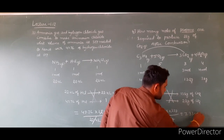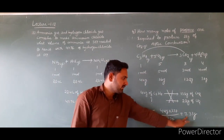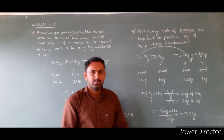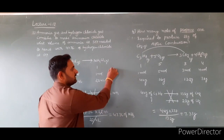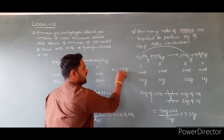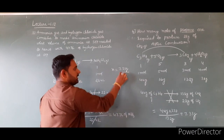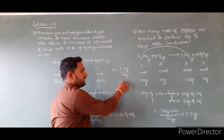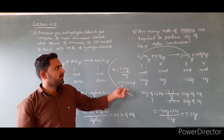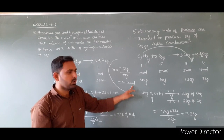We require 7.33 grams of propane, but the question asks for moles. Number of moles n = mass ÷ molar mass = 7.33 ÷ 44 = 0.166 moles. So 0.166 moles of propane are required to produce 22 grams of carbon dioxide.